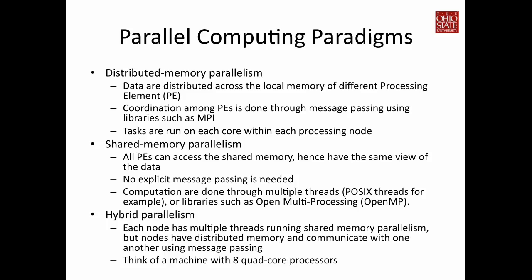Finally, you could have hybrid parallelism — when your machine has many processing nodes that rely on message passing libraries such as MPI to communicate with each other, but within each node you have multiple computation cores and can run multiple threads using shared memory parallelism via OpenMP. For example, with a machine of eight quad-core processors, you perform message passing among processors and shared memory parallelism within each quad-core processor.